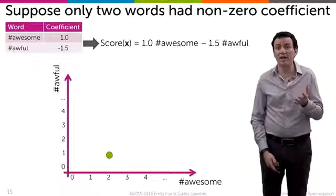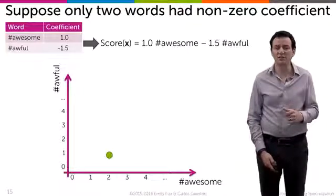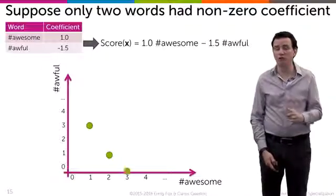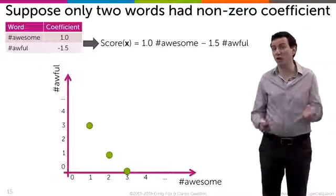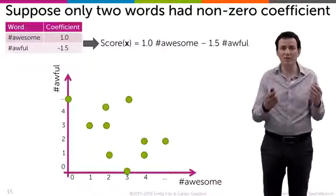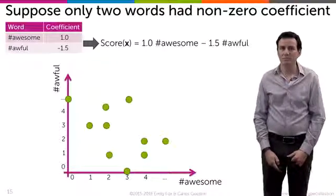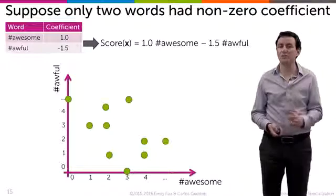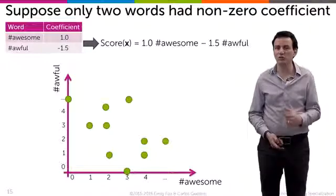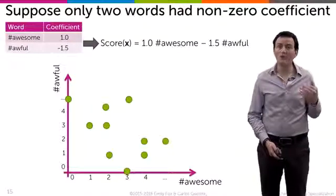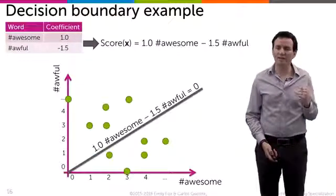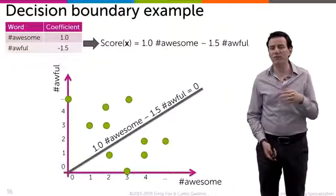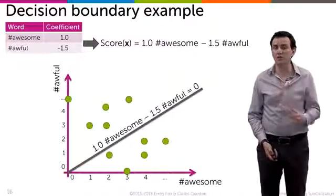Every sentence in my training or prediction set might have three awesomes and one awful, three awesomes and no awfuls, and so on — giving a dataset like this. The classifier trained with coefficients 1.0 and minus 1.5 will have a decision boundary corresponding to a line where 1.0 times awesome minus 1.5 times the number of awfuls equals zero.